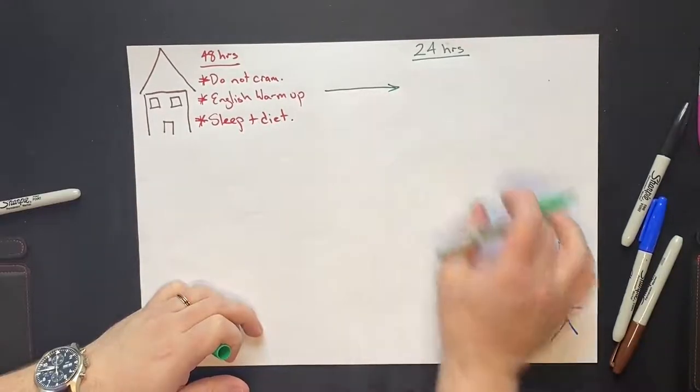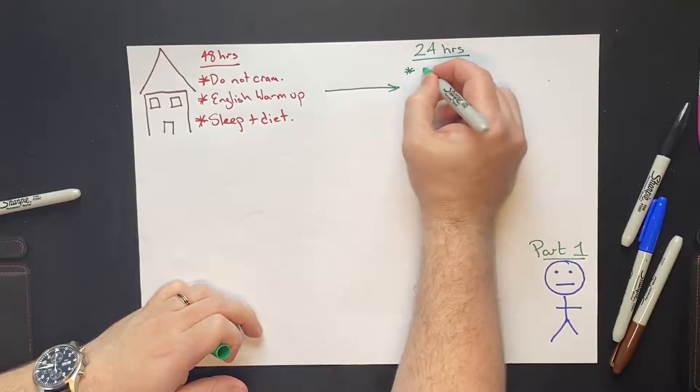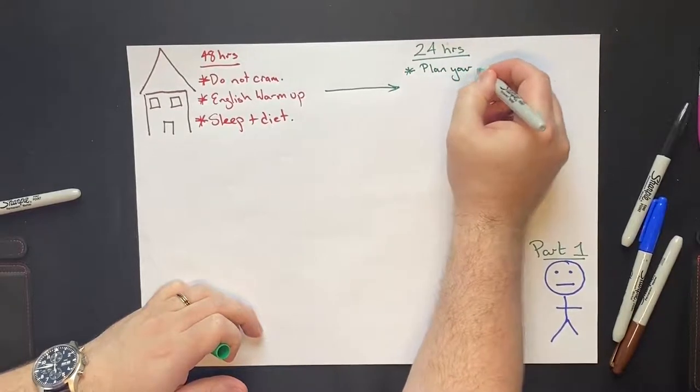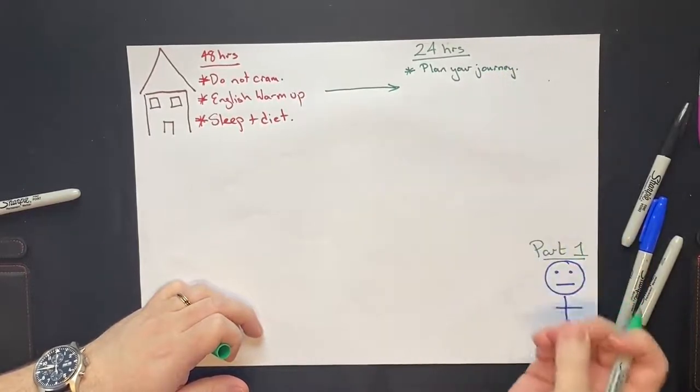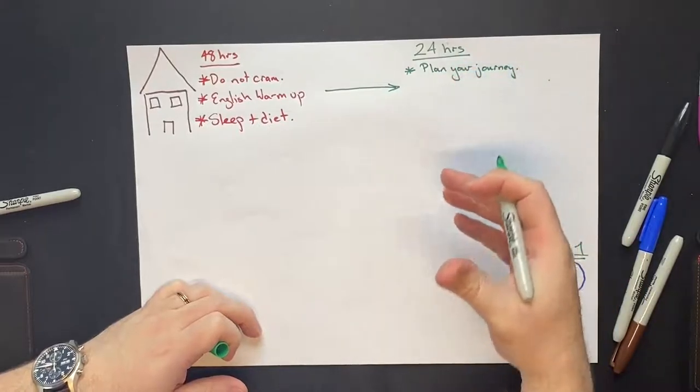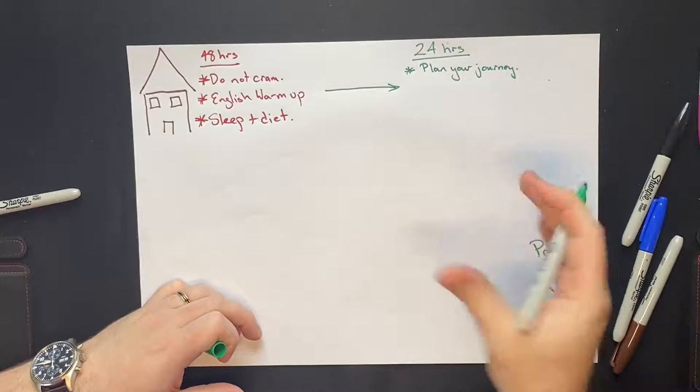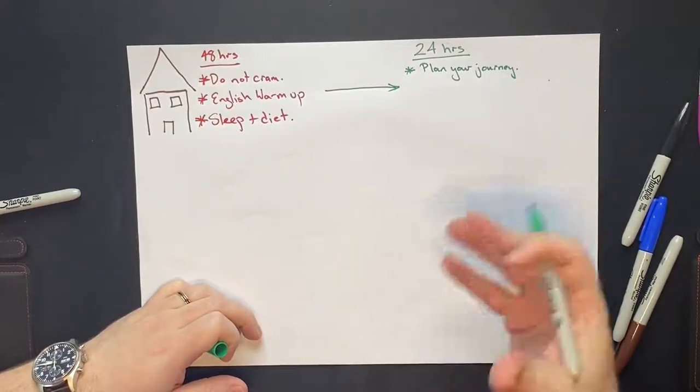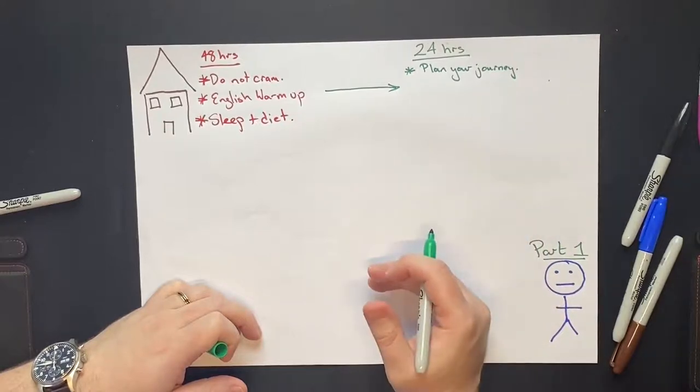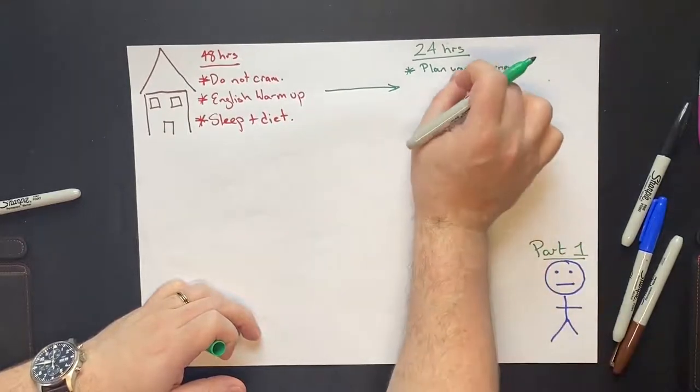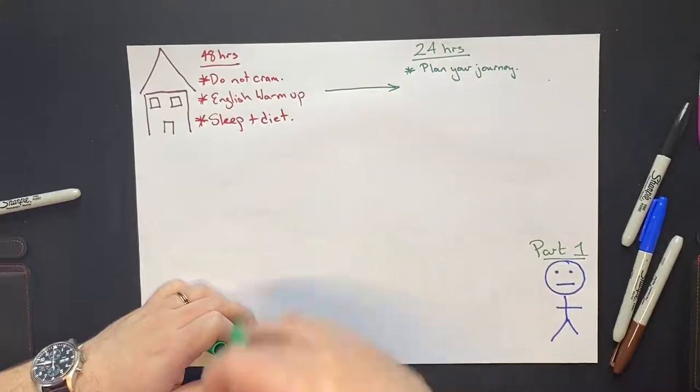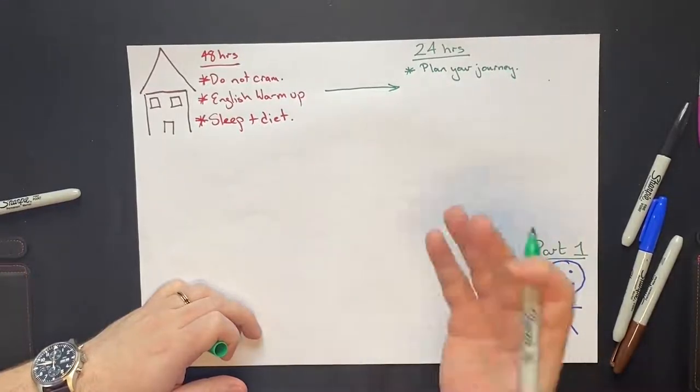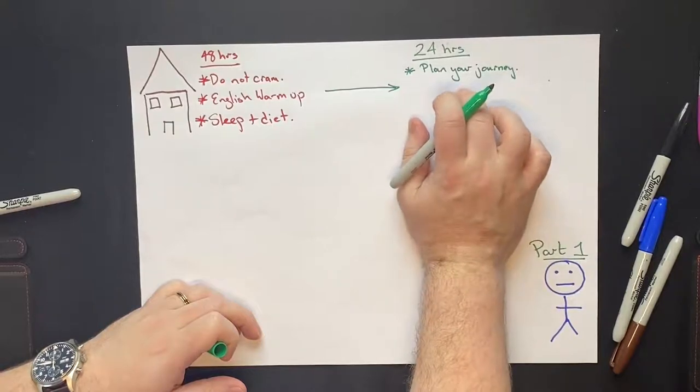So 24 hours before your test, it's really important that you plan your journey. You wouldn't believe the number of students that show up late to their speaking test, and if you show up late, you're going to be very sweaty, you're going to be very stressed, and if you deserve a band seven and you show up late and you're very stressed, you're probably going to get a 6.5 or a 6. That's not the fault of the examiner, that's your fault. It doesn't matter if there was bad traffic, that's your fault for not planning your journey. It is your responsibility to get to the test center on time. So plan your journey.